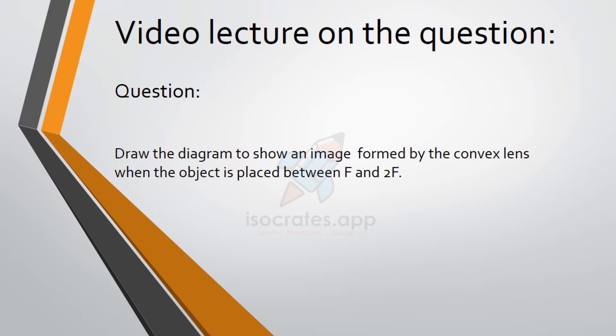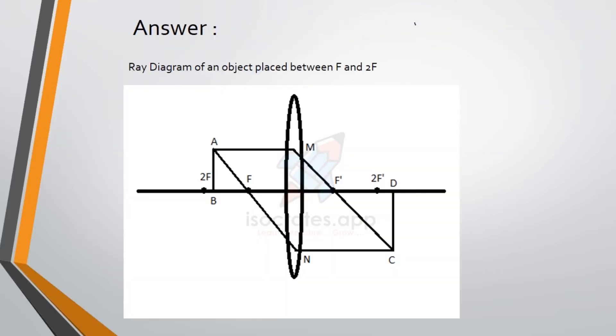Answer: Ray diagram of an object placed between F and 2F. First and foremost, we have to draw the axis, lens, and also mark the first and second focal lengths on the left.